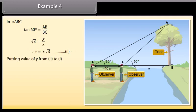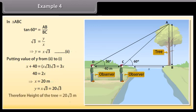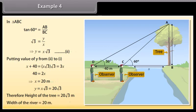Putting value of Y from equation 2 to 1, we get X plus 40 equals X into square root of 3 into square root of 3, which equals 3X. On simplifying we get 40 equals 2X, which implies X equals 20 meters, and Y equals X into square root of 3. On putting the value of X, we get 20 square root of 3. Therefore, height of the tree is 20 square root of 3 meters and width of the river is 20 meters.